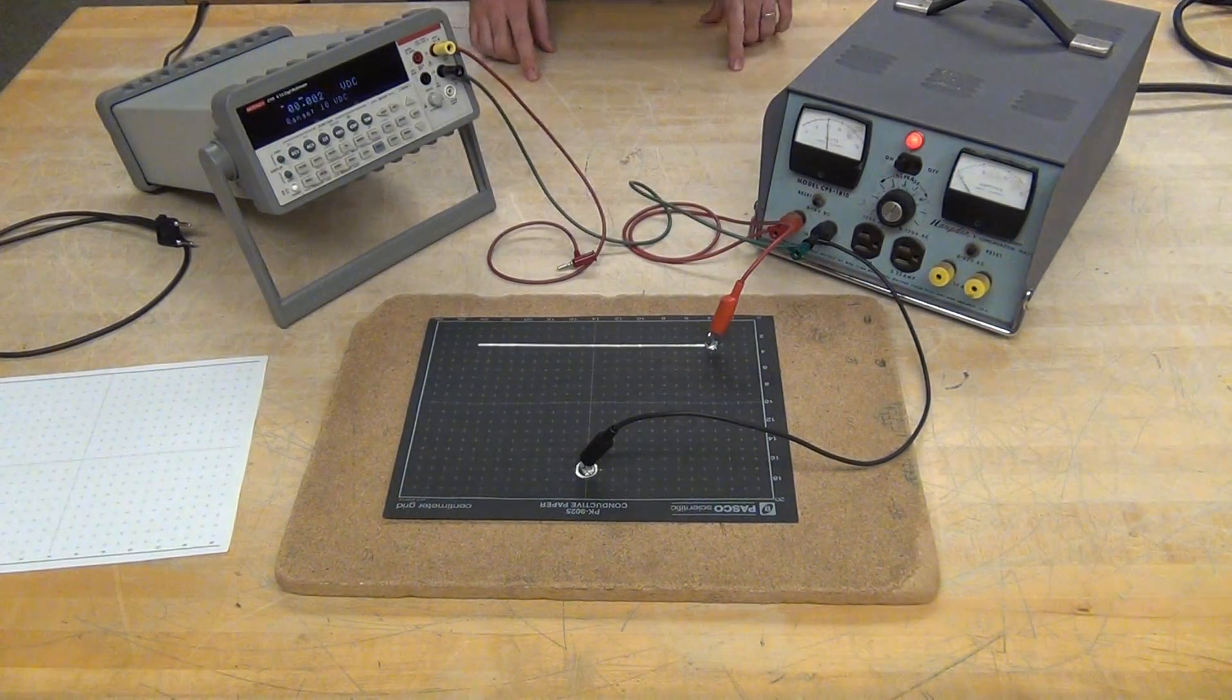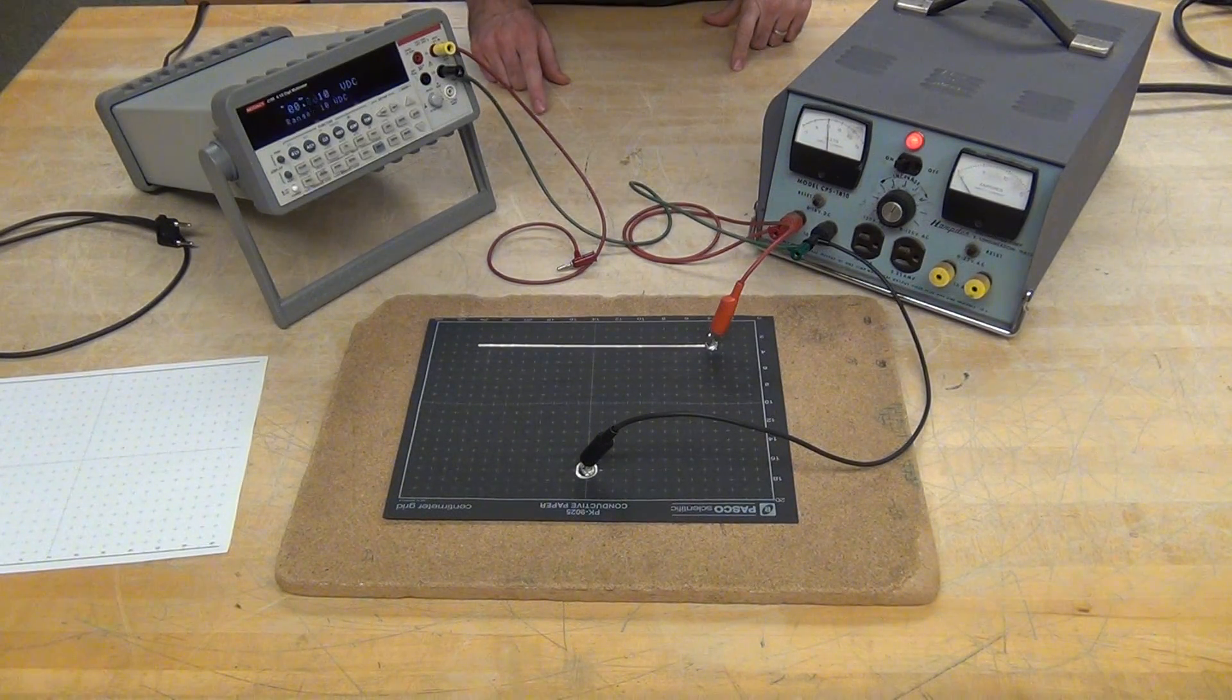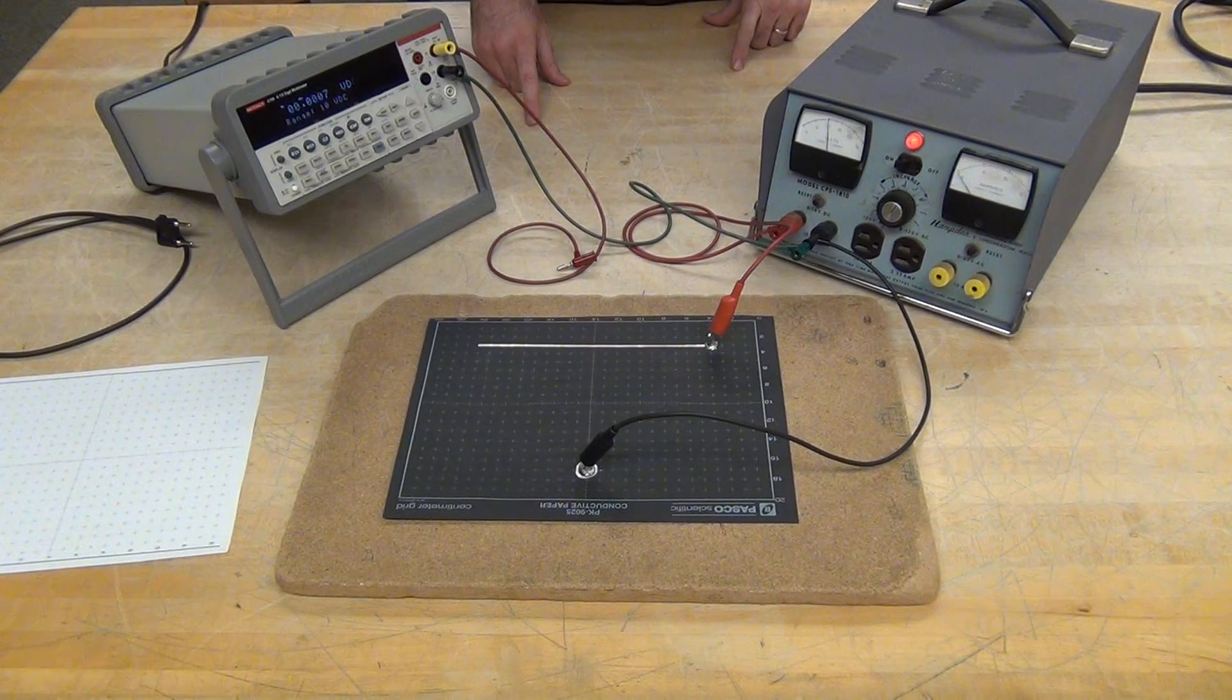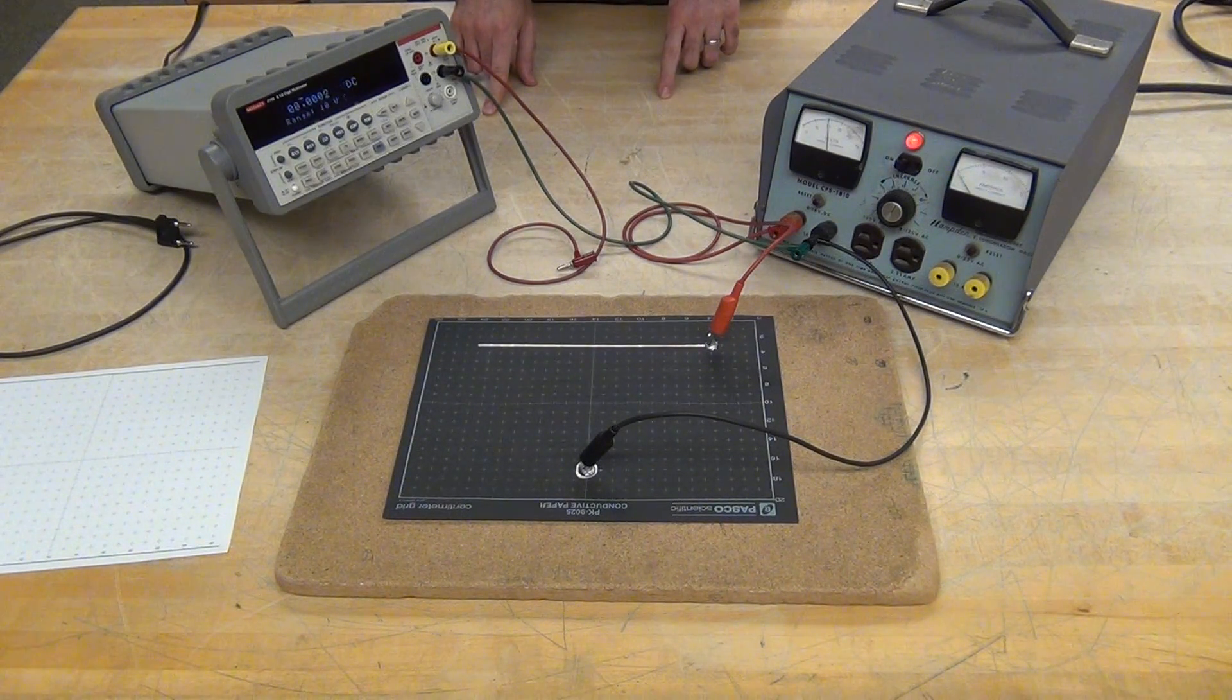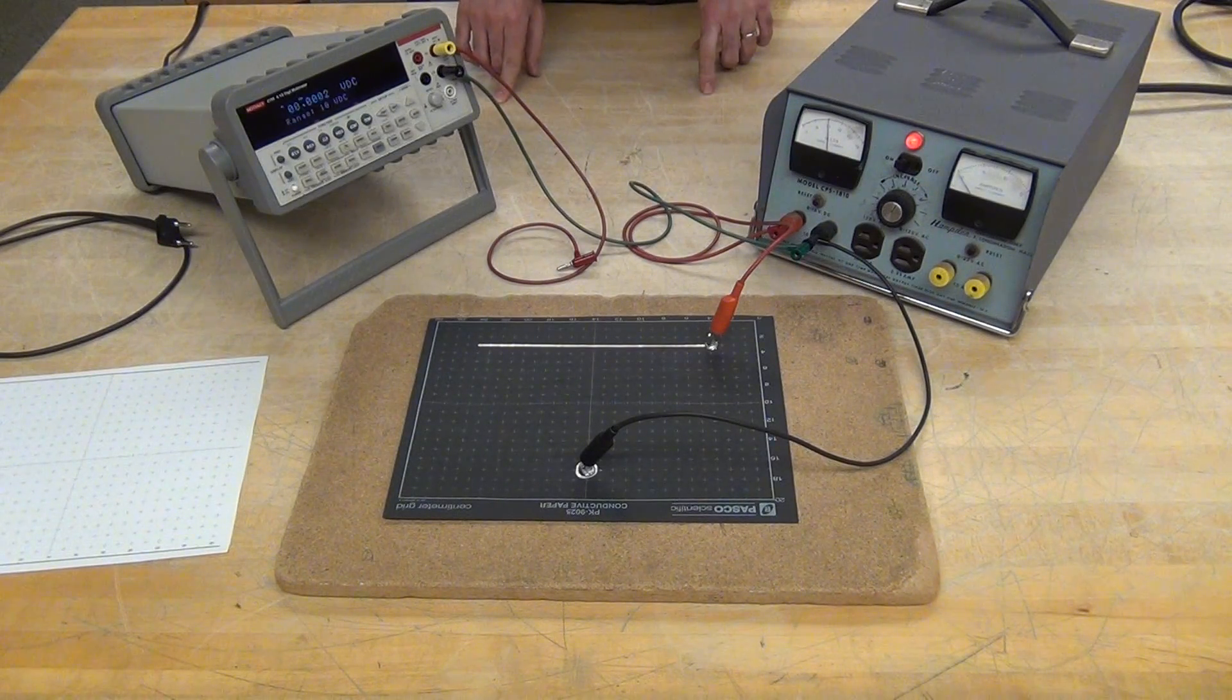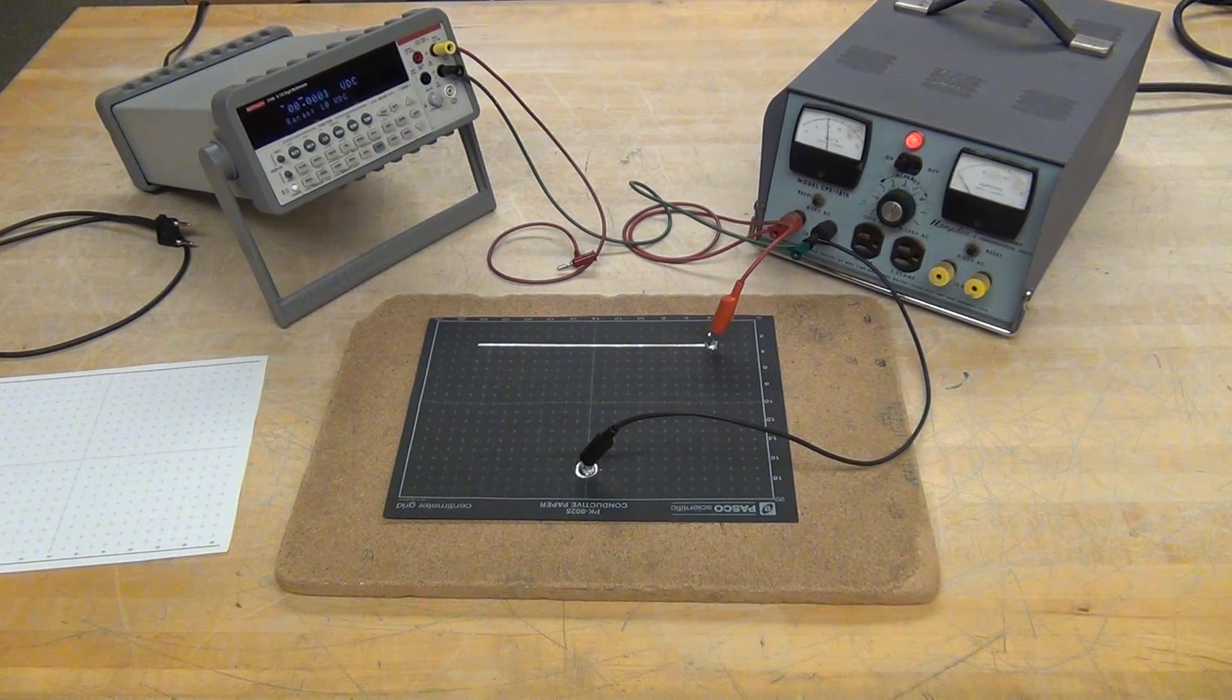Finding equipotential lines for 8 volts, 6 volts, 4 volts, and 2 volts. Getting about 7 points on each of those lines, those equipotential lines, so that I can define the curves that make up those equipotentials.